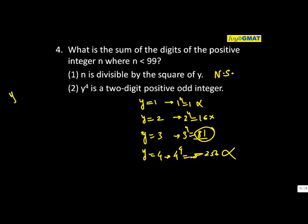y equals 4: 4 to the power 4 is 256—three digits. So the only way you can think about y is 3. Can it be minus 3 also? Yes—minus 3 to the power 4 will still be 81. The first statement alone is not enough, second alone is not enough. Then you're told n is divisible by the square of y. What will y squared be? So n is divisible by 9.